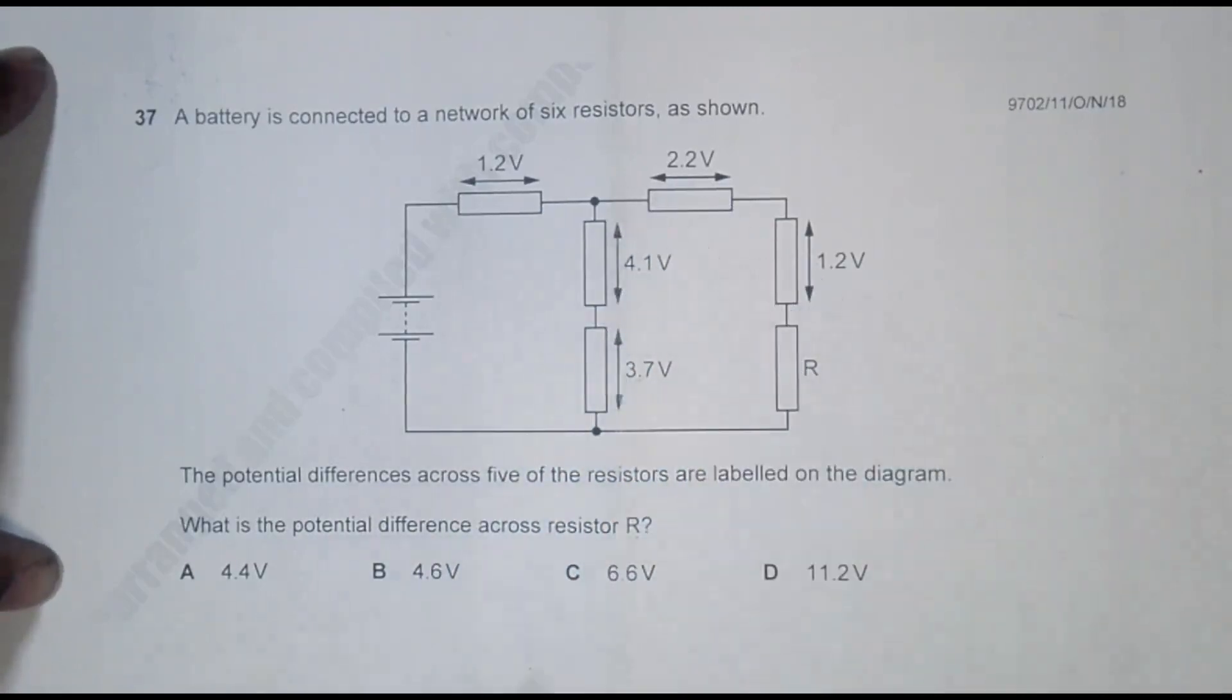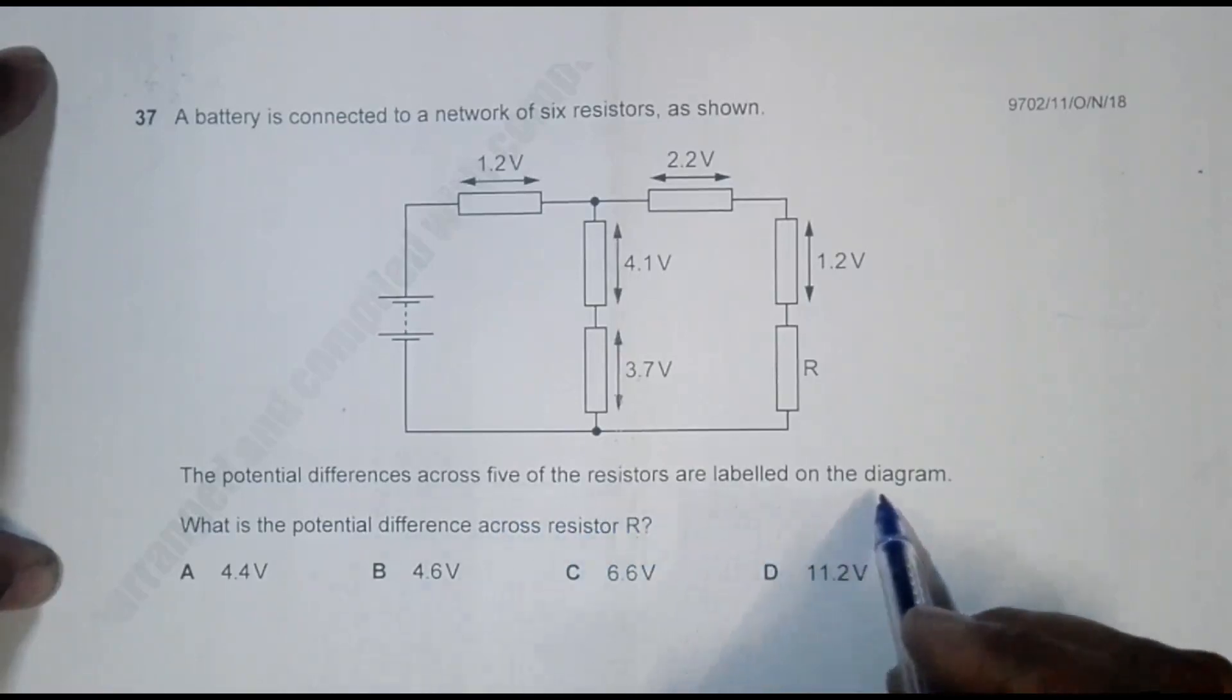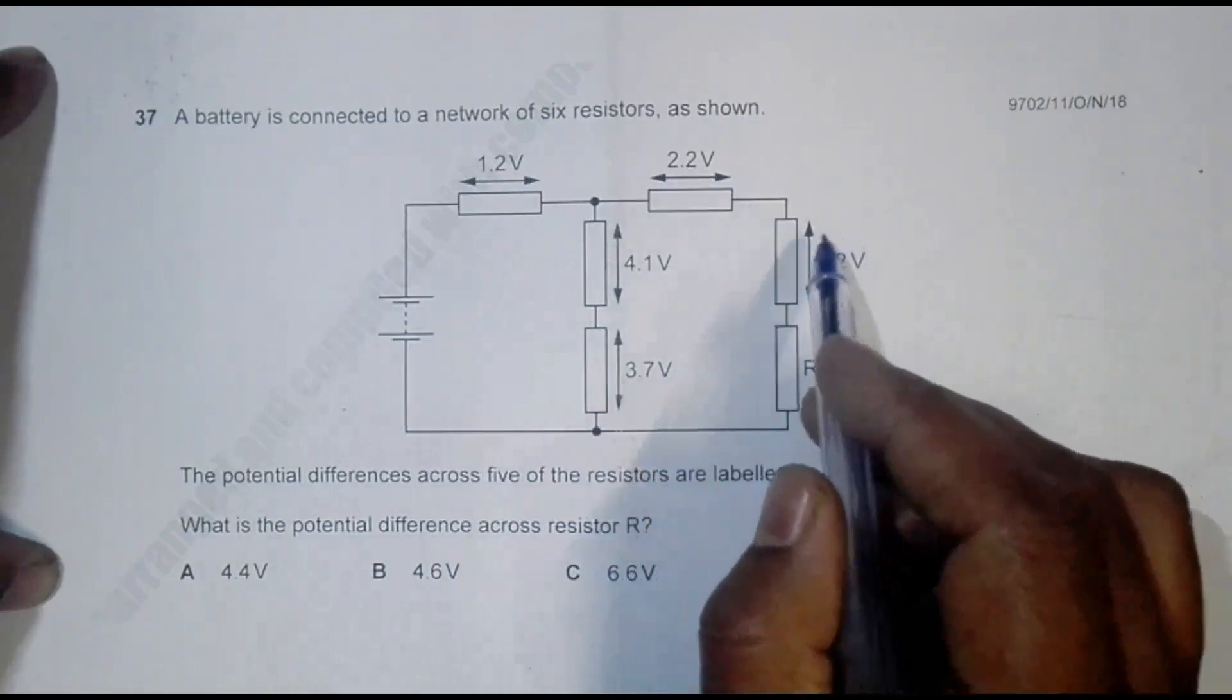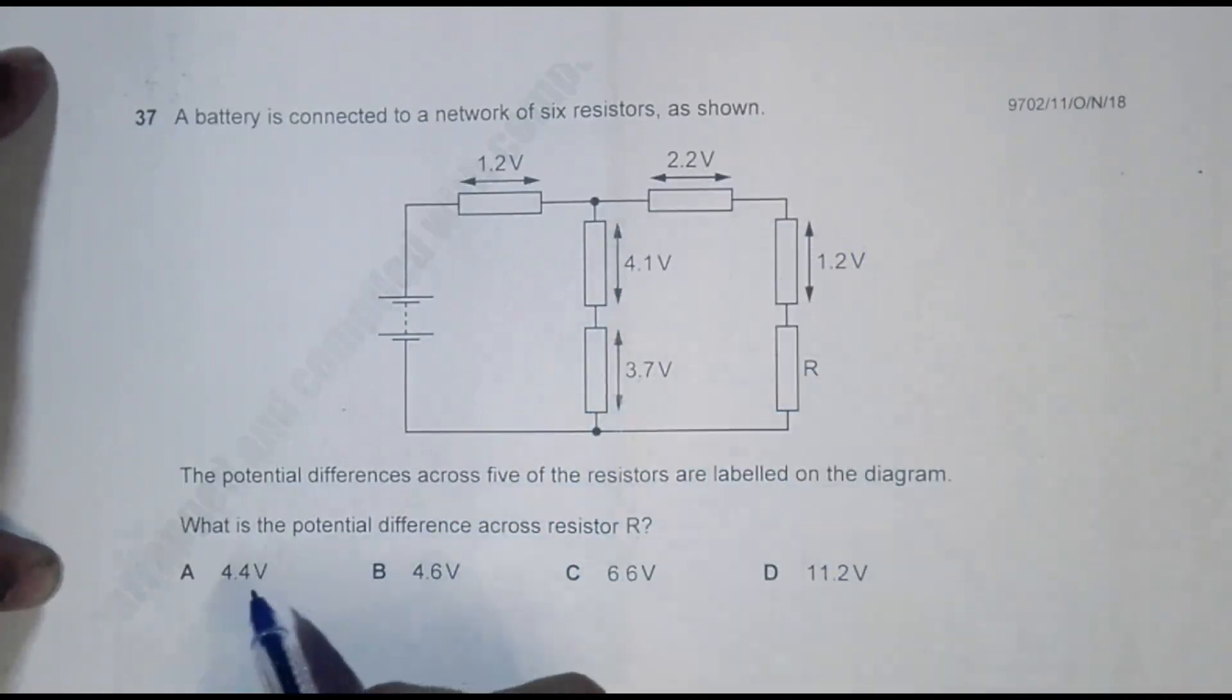The potential difference across five of the resistors are labeled on the diagram. So these five values are given, one of them is not given here, so we have to find what is the potential difference across resistor R.